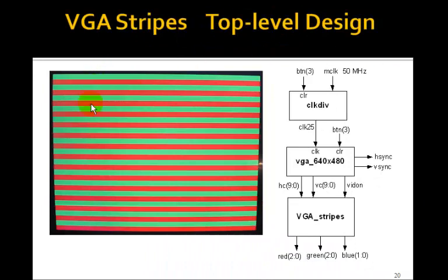We have 15 rows of green, 15 rows of red. Now, you should be able to figure out, for example, how to make the lines wider or thinner by, instead of using VC4, use some other output of the vertical counter. And you also should be able to figure out how to make vertical stripes instead of horizontal stripes. So, I'll let you figure that out.